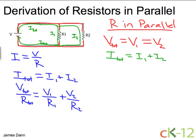Now, we can use the fact that the voltages are all the same. So the voltage across R1 is the same as the voltage across R2, which is the same as the total voltage. So if I plug that in, I get V over R total equals V over R1 plus V over R2.